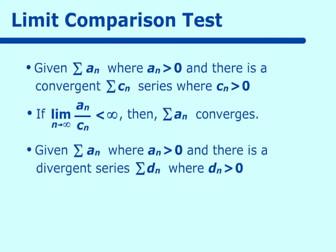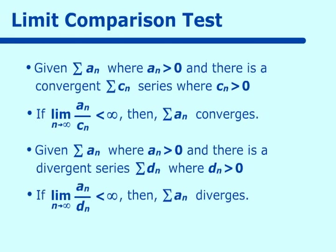However, if you want to show a series is divergent and you know your series is divergent, then you look for a divergent series called d sub n. Again, a sub n and d sub n are all greater than zero. Then you take the limit of a sub n over d sub n, and if that limit is less than infinity or equals some finite number, then the series a sub n diverges.